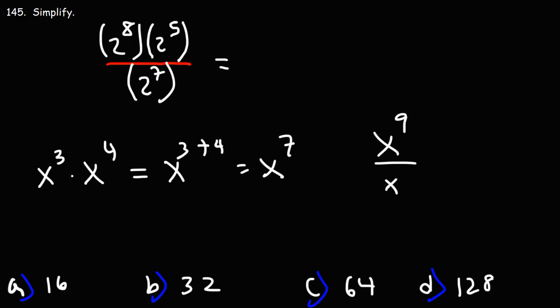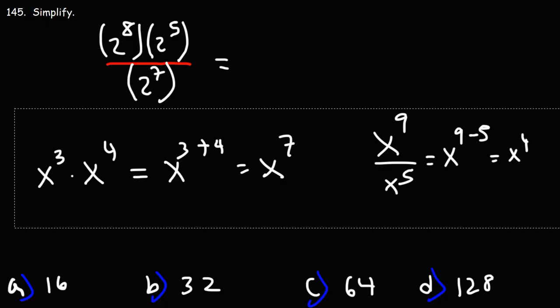Now when dividing, you can subtract. x to the 9 divided by x to the 5 is x to the 9 minus 5, which is x to the 4. So those are some rules you want to keep in mind for this problem.